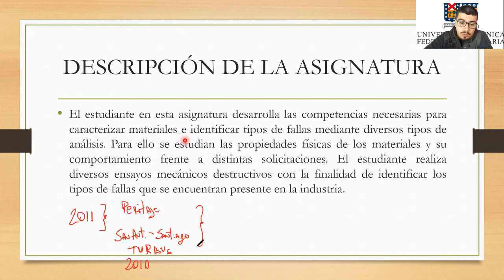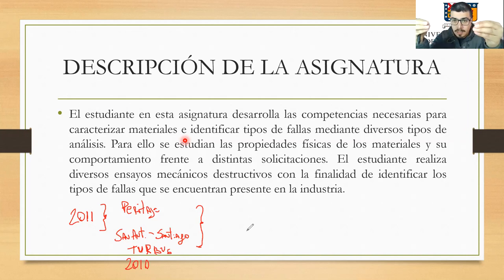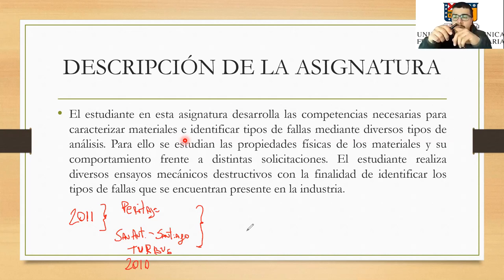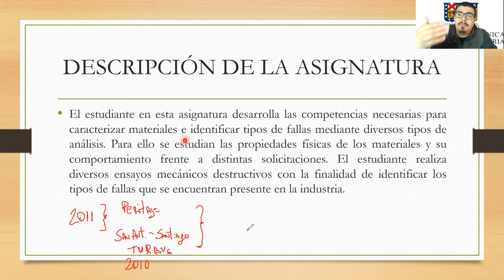Nosotros hicimos el peritaje del accidente, vimos diferentes elementos, hicimos análisis de fallas, estuvimos viendo la estructura y cortes de algunos elementos. Cuando ocurre un accidente, uno va a inspeccionar y las piezas me van a hablar por sí solas: si hay una pieza que se cortó de forma recta, a 45 grados, si hay como un desgarro o una orilla de playa, ese tipo de corte me va a explicar cómo fue el esfuerzo al que estuvo sometido ese elemento antes de cortarse.